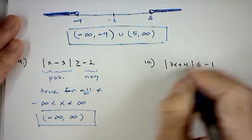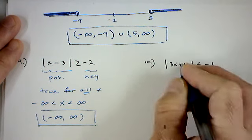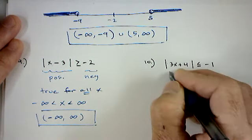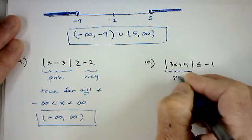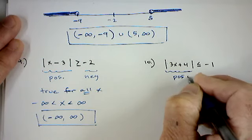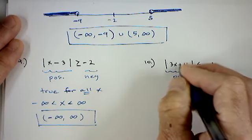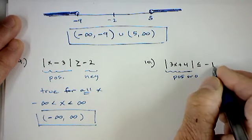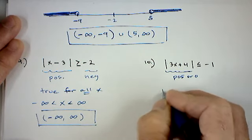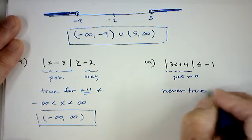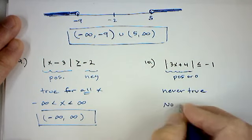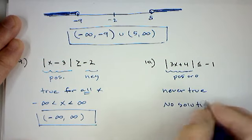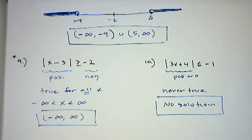Conversely, if you see |3x + 4| ≤ −2 (or any negative number on the right), the absolute value can never be less than or equal to a negative number — the absolute value is always non-negative. This means there is no solution. Make sure you're paying attention to these special cases so you don't get tricked.